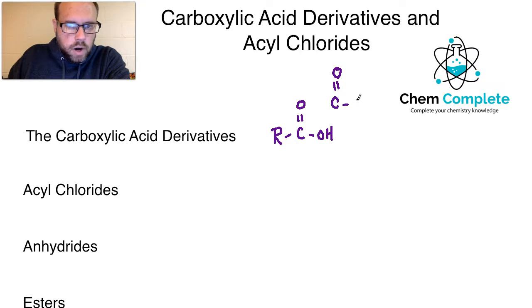And then coming off of here, we've got something that's more electronegative than carbon, be it an oxygen group or a nitrogen group. But this is where the derivative part is going to come in. You're going to see this general format.